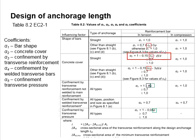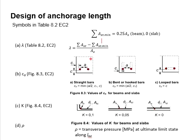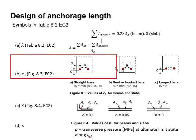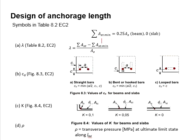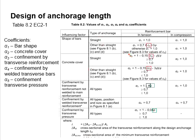In these equations, cd is required. cd can be determined from figure 8.3 given in Eurocode 2, as discussed in the previous videos. Alpha 2 is constrained to be within the range of 0.7 to 1.0.